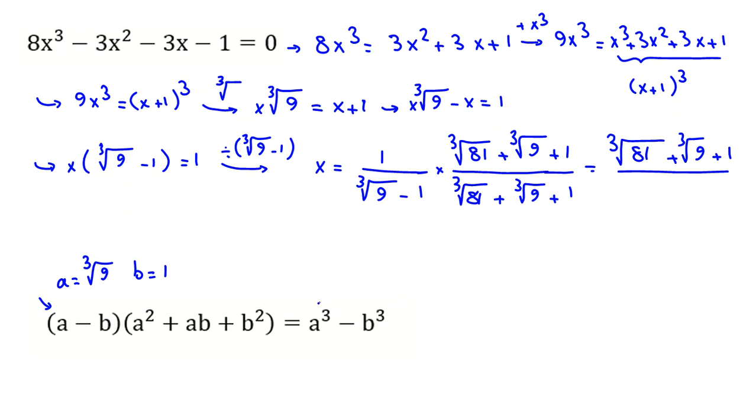The denominator is A³ - B³. A³ is 9 because A is ∛9, and B³ is 1. So 9 - 1 = 8.